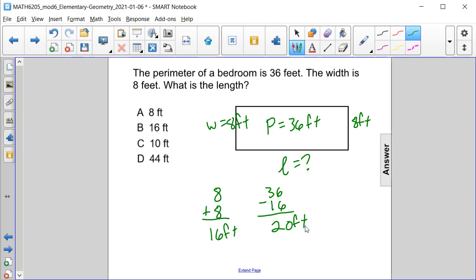And this 20 feet represents 2 lengths. So if we take our 20 feet and divide it by 2, then 1 length will equal 20 divided by 2, which is 10 feet. And that represents our length or answer choice C.